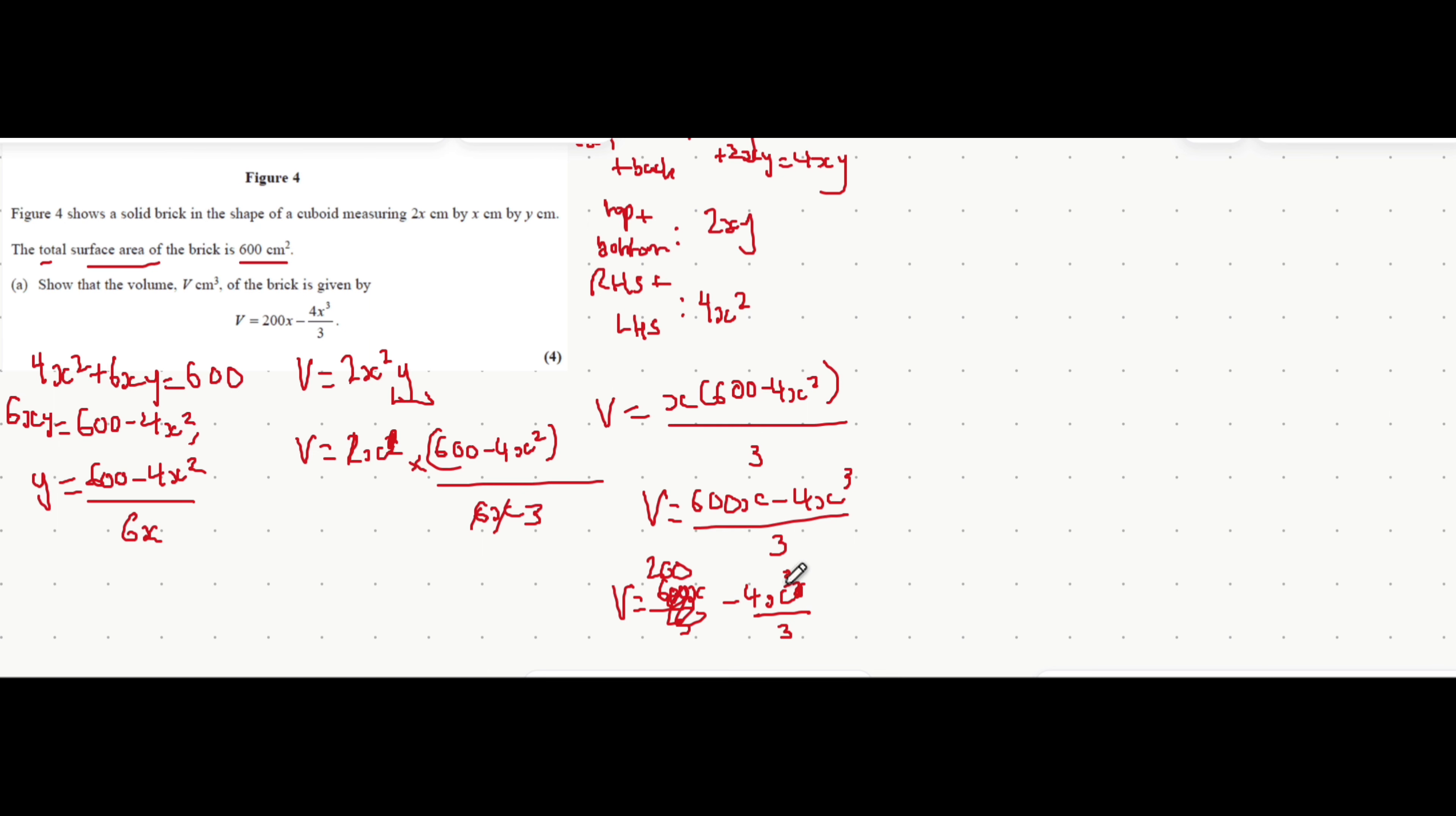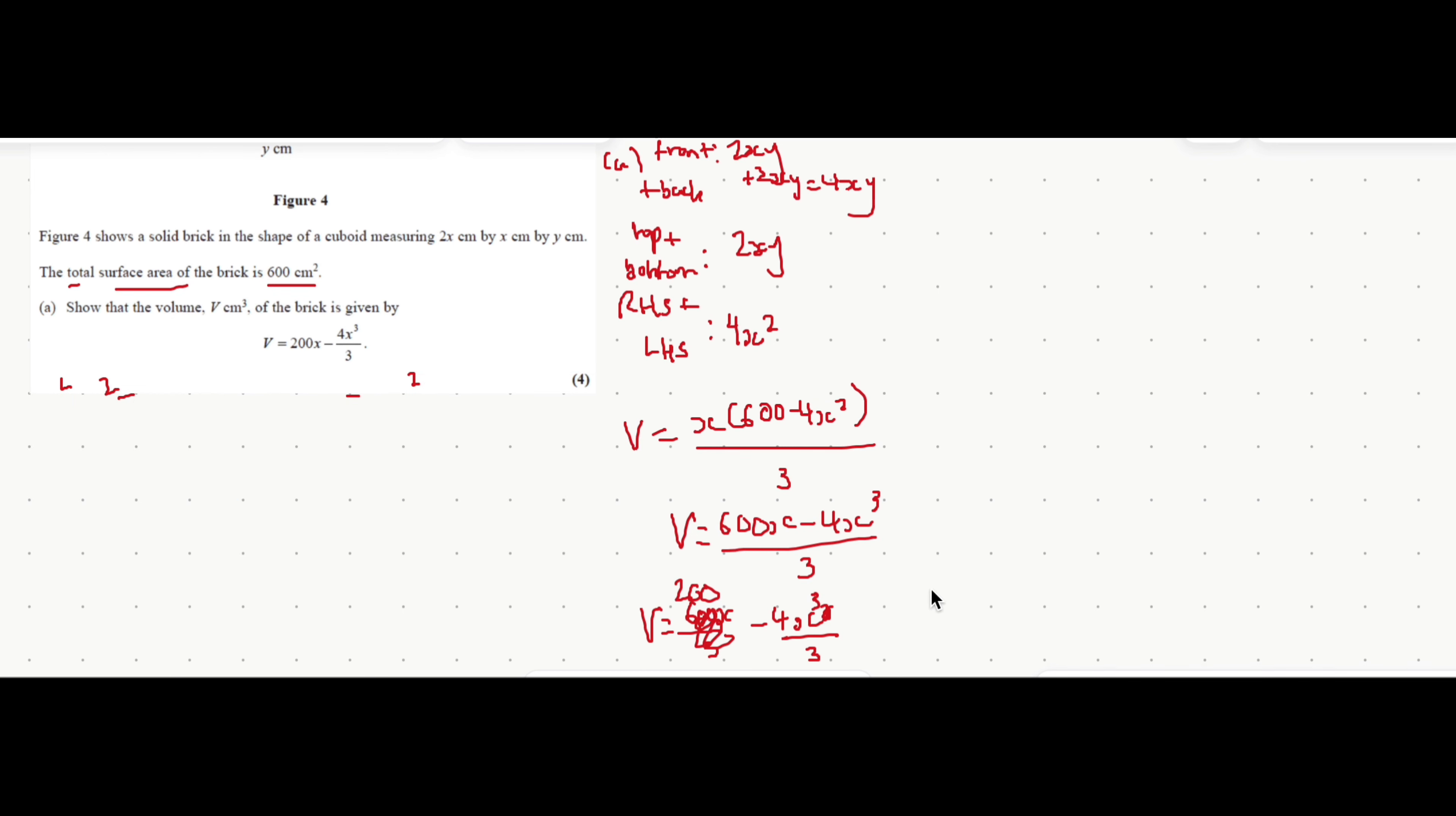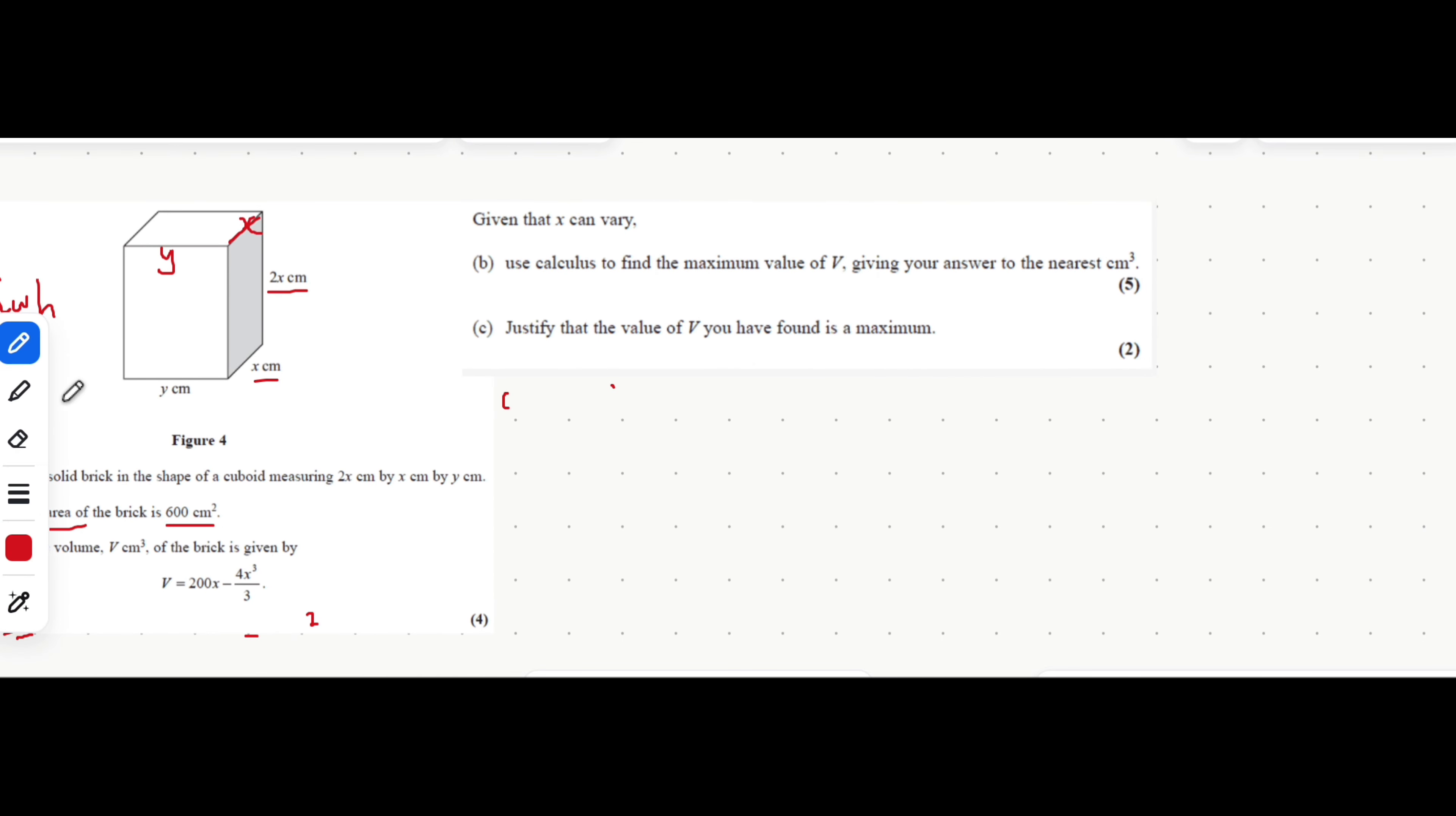Hopefully that all made sense. It was just creating an equation for the area, making y the subject of that area equation, and then inputting that into the volume equation because we realized that the whole volume equation is in terms of x. I'm just going to rub this out so we have space for the next few parts of the question. Let's move on to part b now.